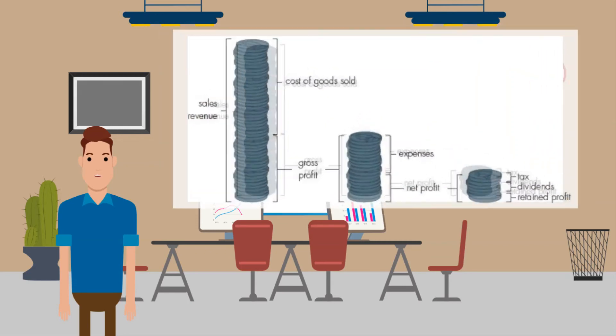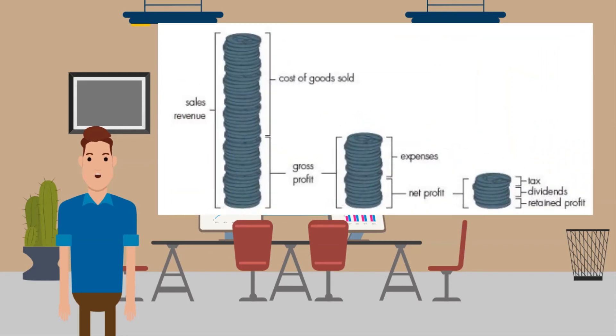Only a very small portion of the sales revenue ends up being the retained profit — all costs, taxes, and dividends have to be deducted from sales. You can get a good sense of how profit is made up from the illustration.